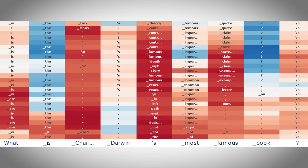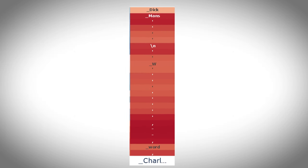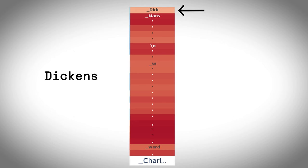Let's look at another column — the one that processes the word 'Charles.' Here we see that the large language model does not have much of a clue about what will come next, but it eventually settles on 'Dickens.' That makes sense: Charles Dickens might be the world's most famous Charles.